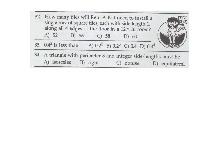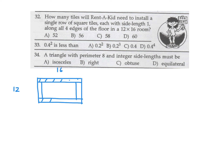How many tiles are needed for a single row along four edges of a 12 by 16 floor, with each tile having side length 1? The two longer sides have 16 tiles each. The shorter sides: subtract the corners already counted, giving 10 each. Total: 16+16+10+10 equals 52. Number 32, answer is 52.